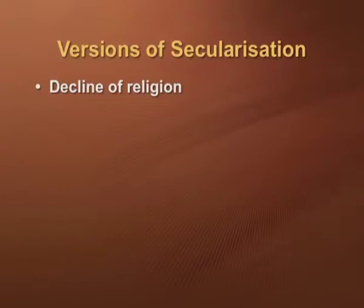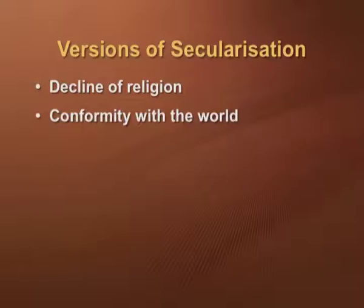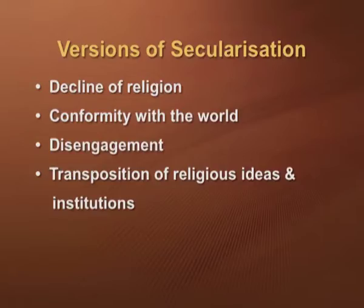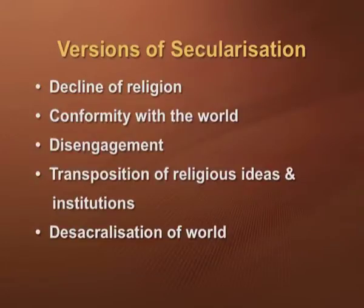Shiner discusses six different versions of secularization used by sociologists. First, decline of religion, which means religious symbols, doctrines and institutions lose their social significance. Second, conformity with the world, where religious movements become oriented to the goals of this world rather than the other world. Third is disengagement, where the church loses functions to other institutions and becomes less significant in moral and political terms. Fourth is transposition of religious ideas and institutions, where what were previously regarded as grounded in divine power becomes seen as human creations. Fifth is desacralization of the world, where scientific and rational explanations take precedence over religious faith. And finally, from sacred to secular society, religion moves from its central position and takes its place among a whole gamut of other possible philosophies.